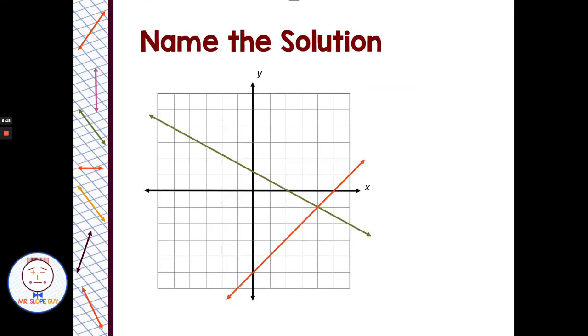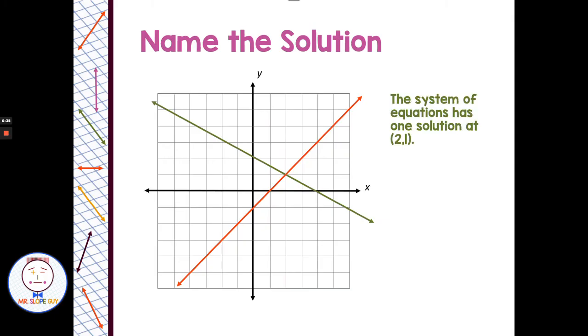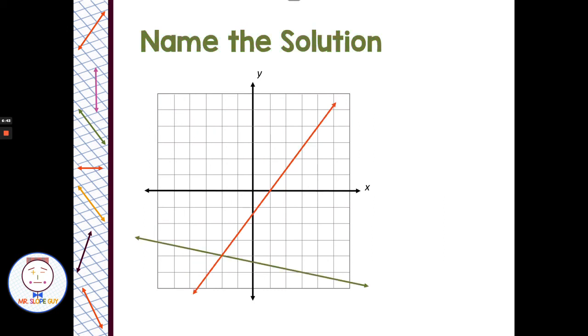Name that solution. Well, this one's already graphed for us. Where do the two points cross? Well, there's one solution and it's at the point 4, negative 1. How about this one? Where do those two lines cross? Well, they have one solution, the two lines intersect, and it is at the ordered pair 2, 1. How about this system of equations? Where do those two lines intersect? It has one solution at negative 2, negative 4.